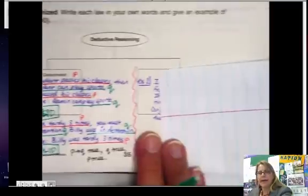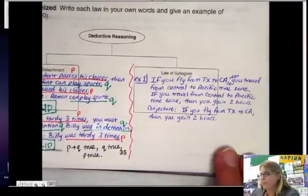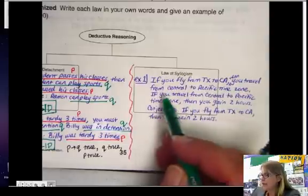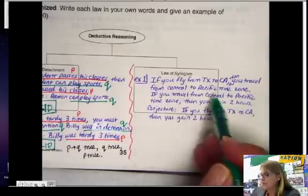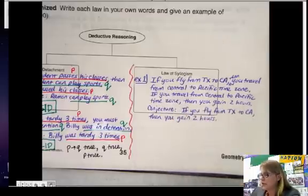Okay, let's take a look at the other law, the law of syllogism. I have one example here for you. If you fly from Texas to California, then you travel from the central to Pacific time zone. If you travel from central to Pacific time zone, then you gain two hours. So here's my conjecture.